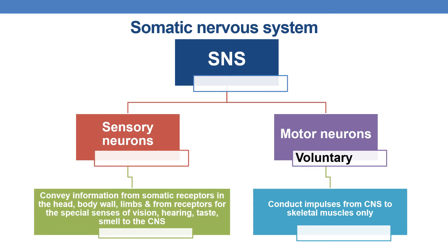Coming to the somatic nervous system: in each nervous system there are mainly two types of neurons — sensory neurons and motor neurons. The sensory neurons of the somatic nervous system convey information from somatic receptors in the head, body wall, and limbs, and from receptors of special senses such as vision, hearing, taste, and smell to the CNS. When it comes to motor neurons, they conduct impulses from the CNS to skeletal muscle only, and this action is mostly voluntary.